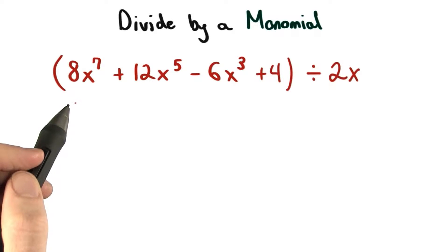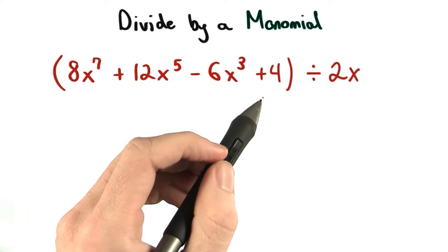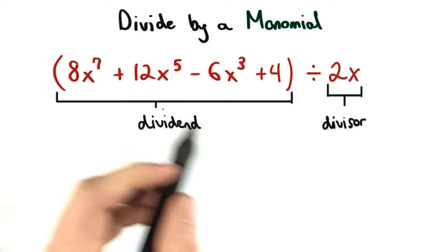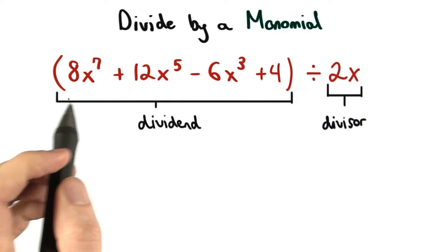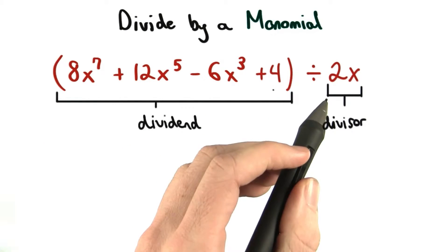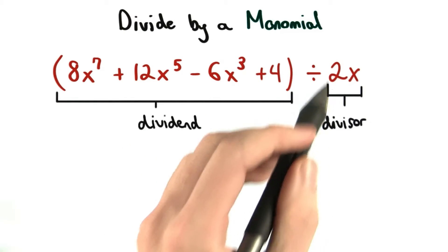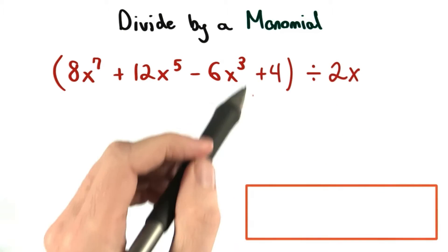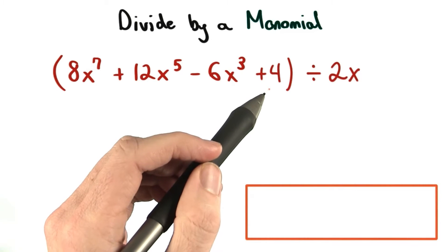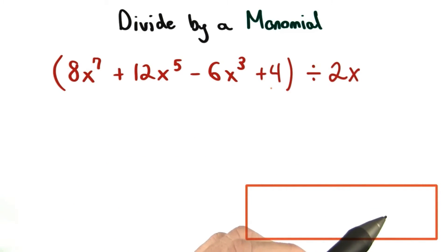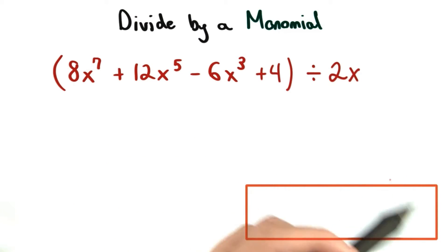Let's consider the same problem with a constant added to our dividend. The dividend is simply the thing that we're dividing into, and the divisor is the second thing that we're dividing by. How would adding this constant change our answer? What new term would we need to include?